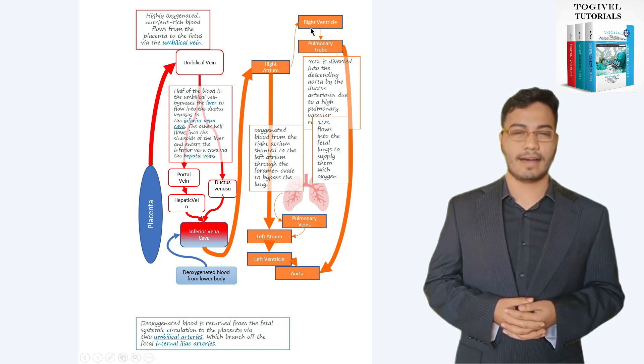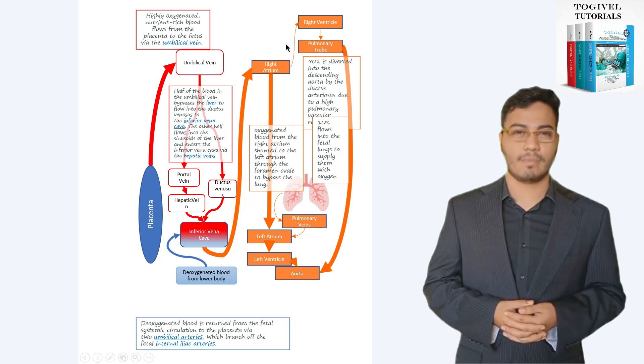The superior vena cava courses inferiorly and anteriorly as it enters the right atrium, ensuring that less well-oxygenated blood returning from the brain and upper body also will be shunted directly to the right ventricle.